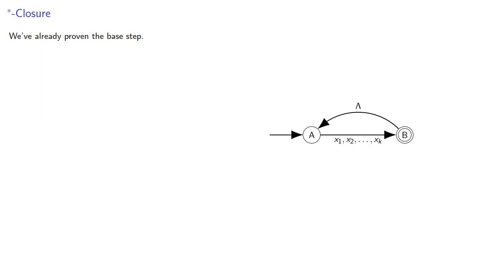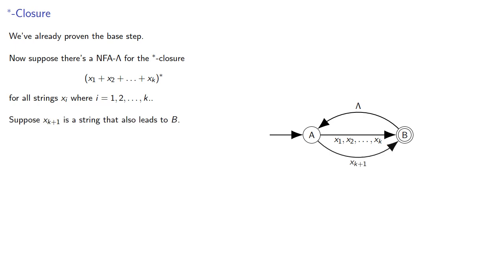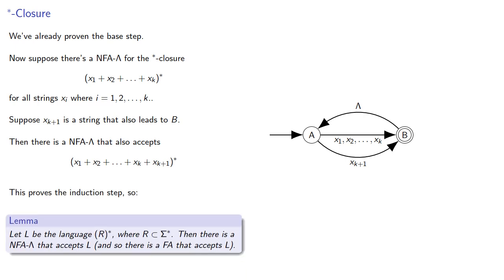We've already proven the base step. Now suppose there's an NFA lambda for the star closure of a set of k elements for all strings xi. Now suppose x is a string that also leads to our accepting state. Then there's a set of transitions following x, then there's an NFA lambda that also accepts this one larger set, and this proves our induction step. And so if L is a language generated by a star closure, then there's an NFA lambda that accepts L, and so there's a finite automaton that also accepts L.